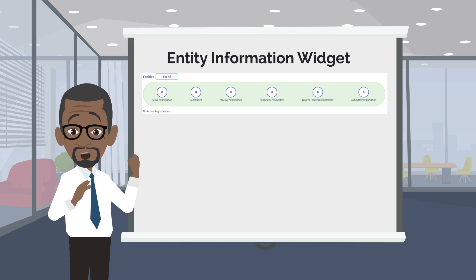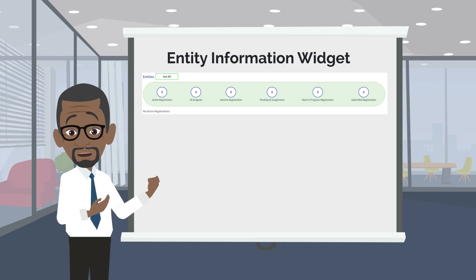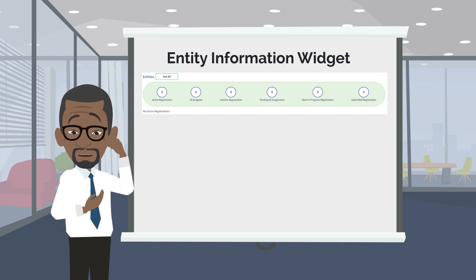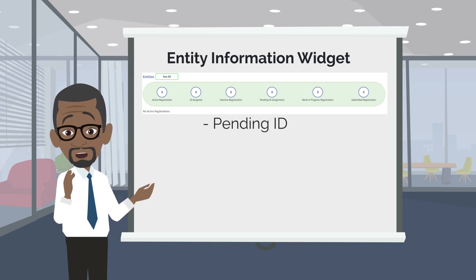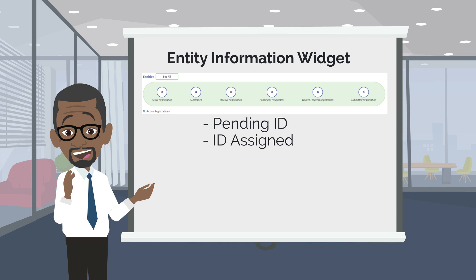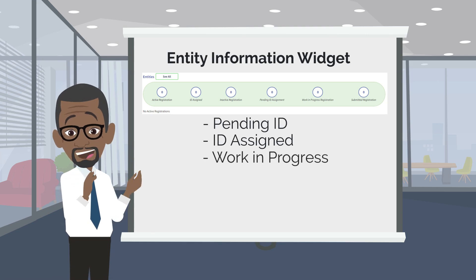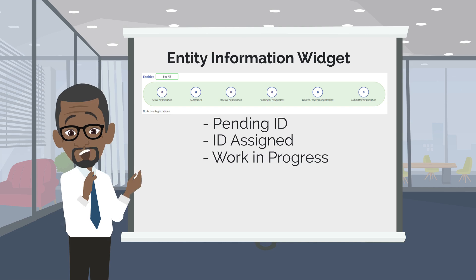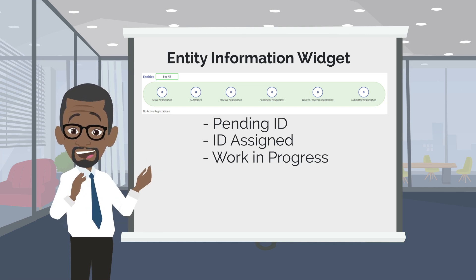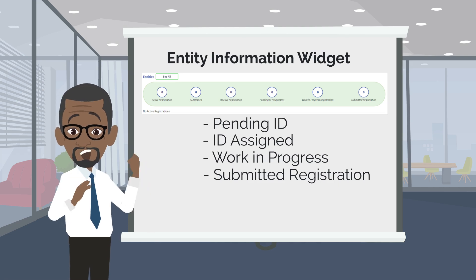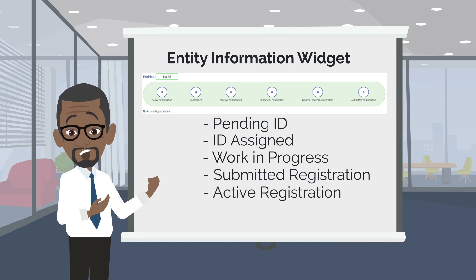As an entity moves through the SAM.gov registration process, each segment of the widget will change. If the entity has submitted information for a UEI, a number 1 will populate in the pending ID assignment circle. Once a UEI has been issued, a 1 will then populate in the ID assigned circle. Work in progress registration means the entity is currently working on tasks to submit the registration but has not fully submitted the information to SAM.gov for review. Once submitted, a number 1 will populate in the submitted registration circle. When all entity information has been approved, a 1 will appear in the circle with active registration.